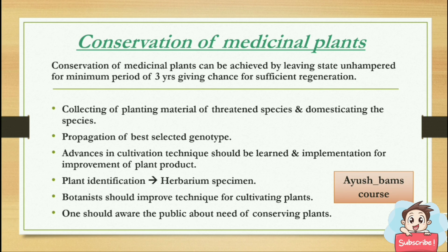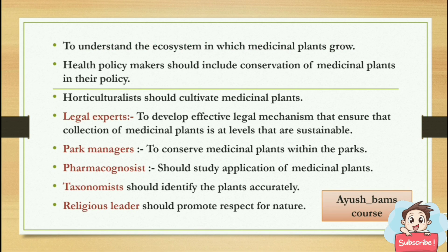Plant identification — for example, herbarium specimens. Botanists should improve techniques for cultivating plants. One should make the public aware about the need for conserving plants. To understand the ecosystem in which medicinal plants grow, health policy makers should include conservation of medicinal plants in their policy. Horticulturists should cultivate medicinal plants. Legal experts should develop effective legal mechanisms that ensure collection of medicinal plants is at sustainable levels. Park managers should conserve medicinal plants within the parks.